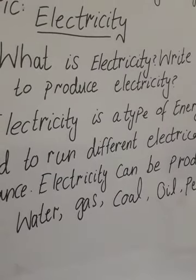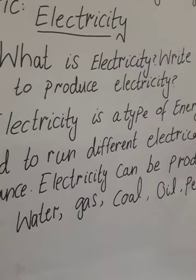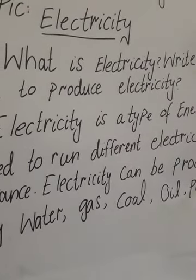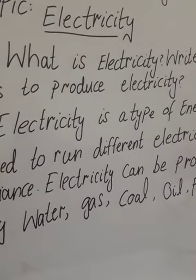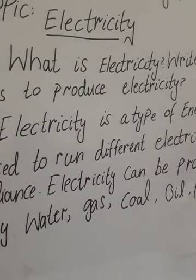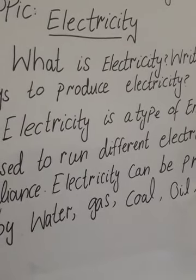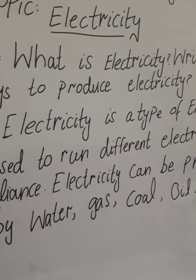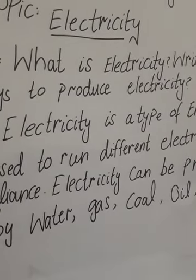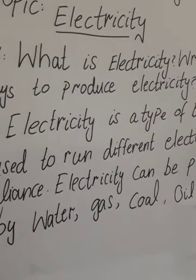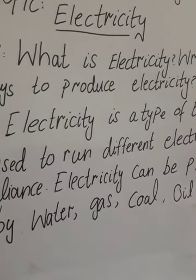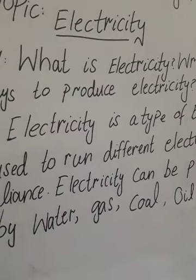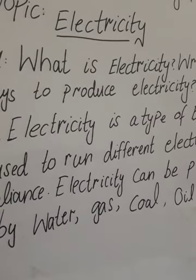Static electricity is produced by the rubbing of two objects. For example, the charge produced on an LCD screen at your home — you can try rubbing a scale or a balloon on your head and then place some paper near it; the paper starts sticking to that object because of static electricity. Also, during a thunderstorm, the lightning we see in the sky is because of static electricity.